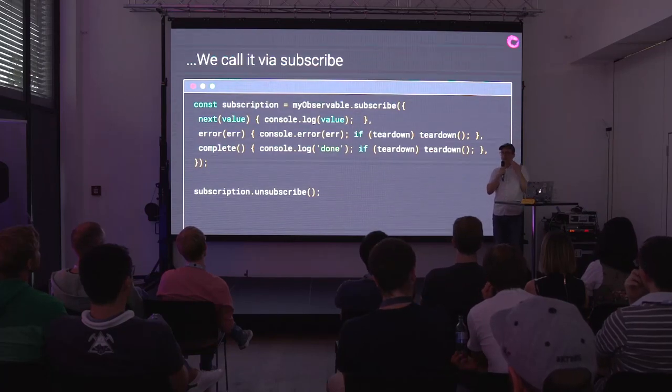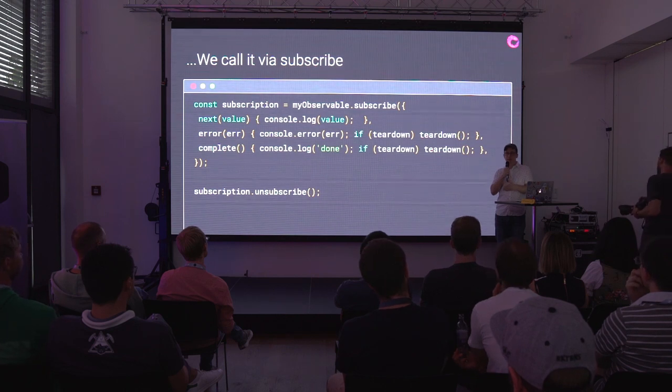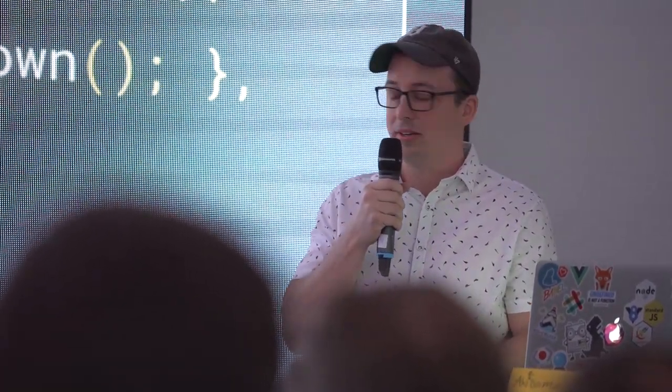Like: I'm going to call your teardown logic if you've errored or completed. I'm not going to allow you to error twice or call next after you've errored or completed. And it returns a subscription object which wraps up whether there's an actual teardown. If there's no teardown and you call unsubscribe, that's a no-op. But if there is one, it's going to call the teardown logic.